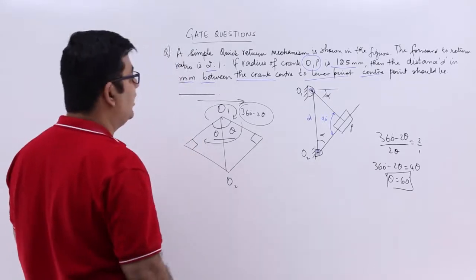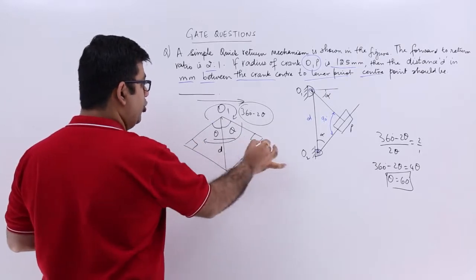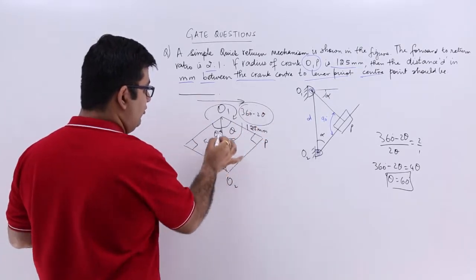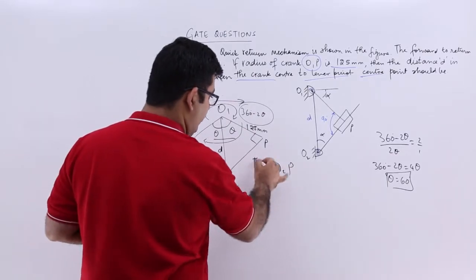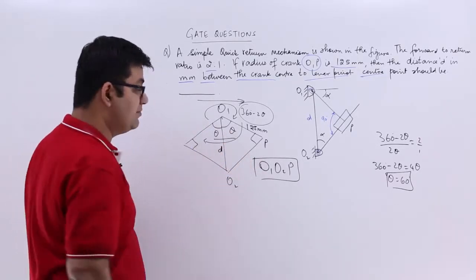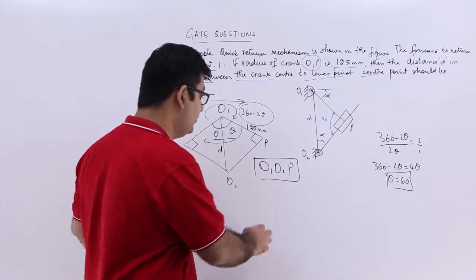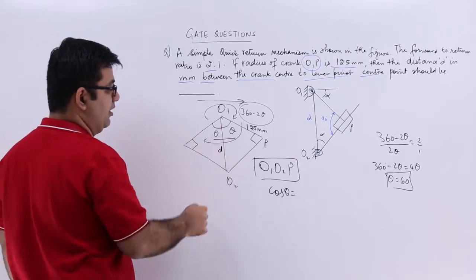Now I have to calculate the value of d. This is d, O1 O2. O1P is 125. So if you look at this triangle O1 O2P, which is the right angle triangle at P, O1 O2 becomes the hypotenuse and O1P becomes the base. So cos of theta will help us get the value of d.